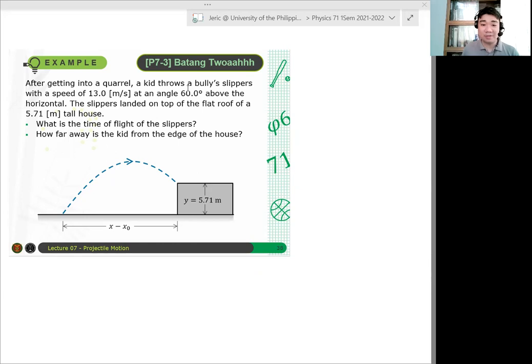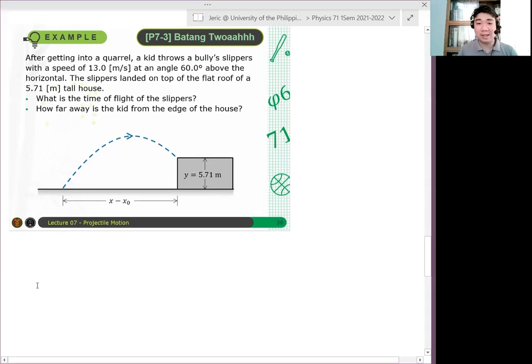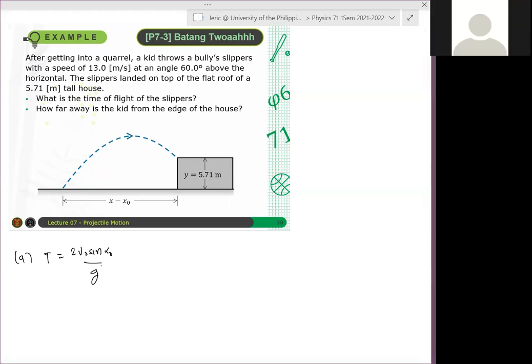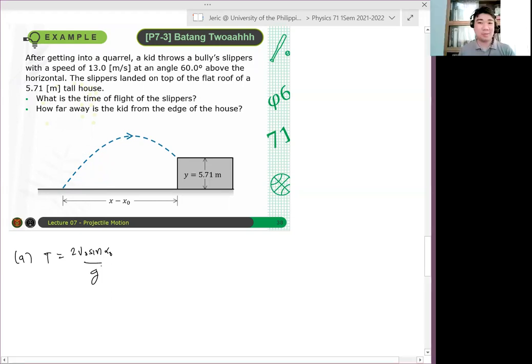Okay, let me solve. I'll just solve this because we don't have limited time. So letter A. Ngayon, ganito. Pansinin nyo, pwede ka bang gamitin yung t equals 2V naught sine alpha naught over g dito sa first question. Pwede ka bang gamitin yan? Can I use that? No, exactly. Bakit? Bakit hindi mo siya pwedeng gamitin?